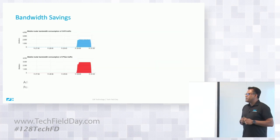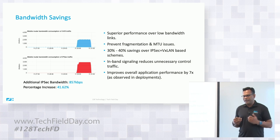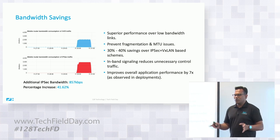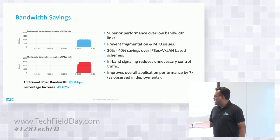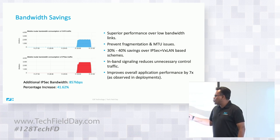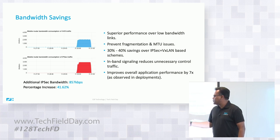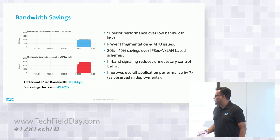Let's look at how much the bandwidth savings will be. Someone's going to show a live demo later on to compare. We'll send the same stream over 128T and SVR and do a comparison. This is a comparison of SVR versus IPsec for the same traffic being sent and received. We're using iMix packets with encrypted flows with authentication turned on.